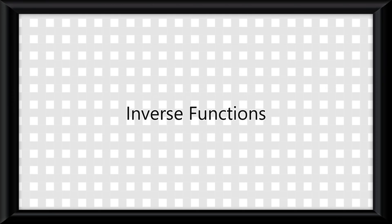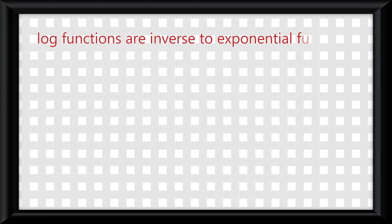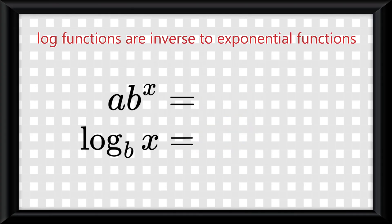If you remember back to inverse functions, the way they work is the coordinate points get swapped between the original and the inverse function. Well, log functions are inverse to exponential functions, meaning if an exponential function has a point at t comma s, the inverse log function of it will have a point at s comma t.